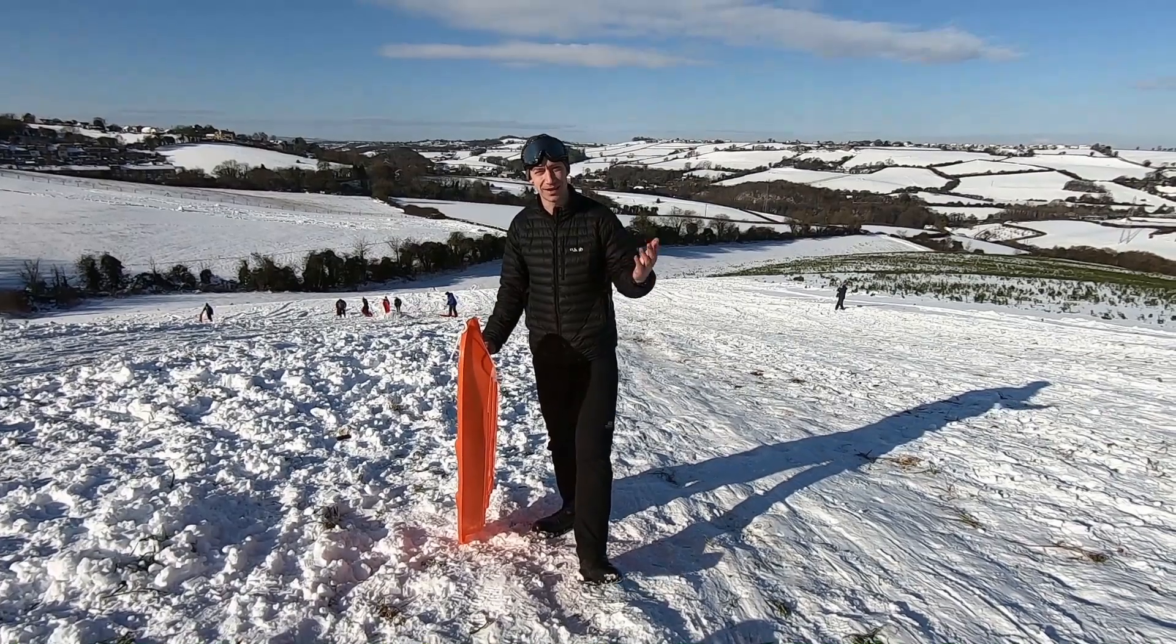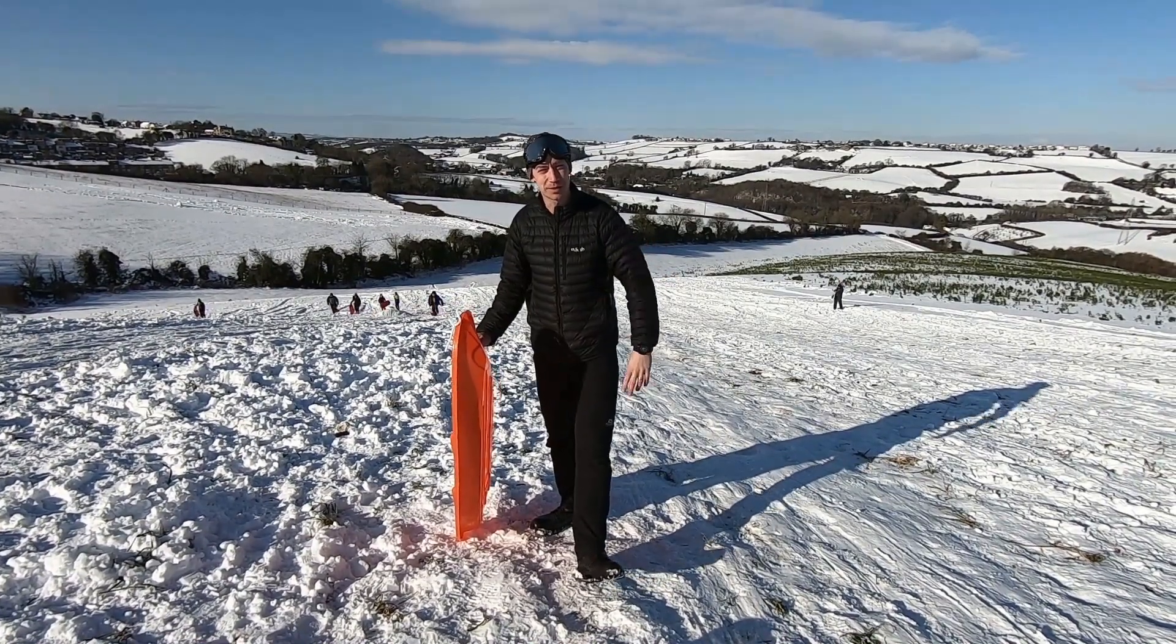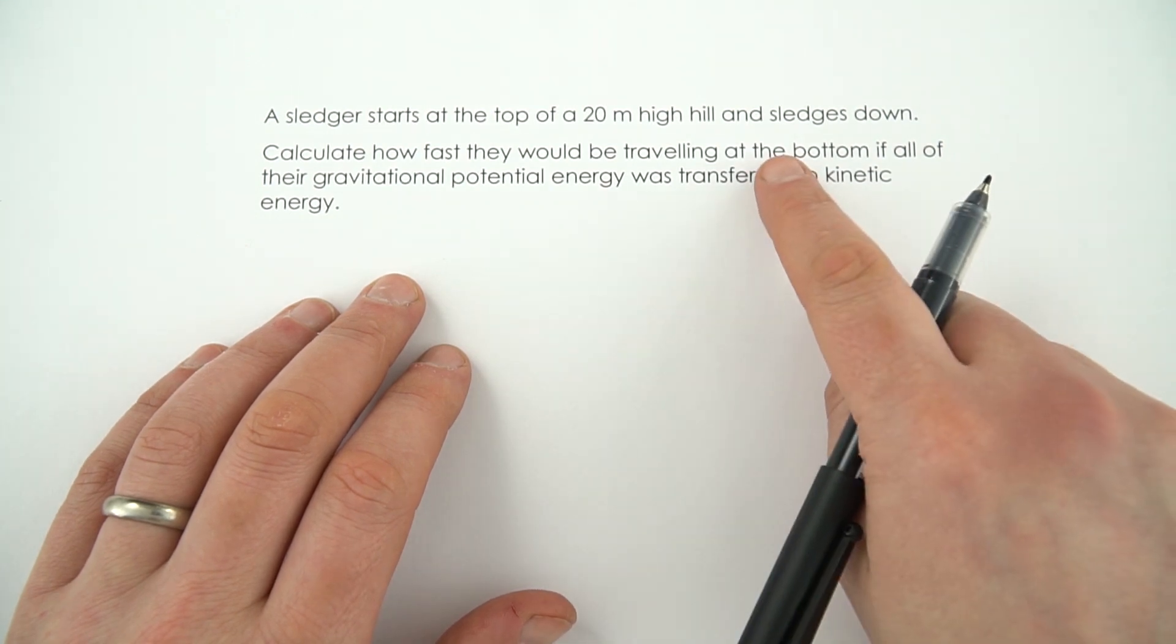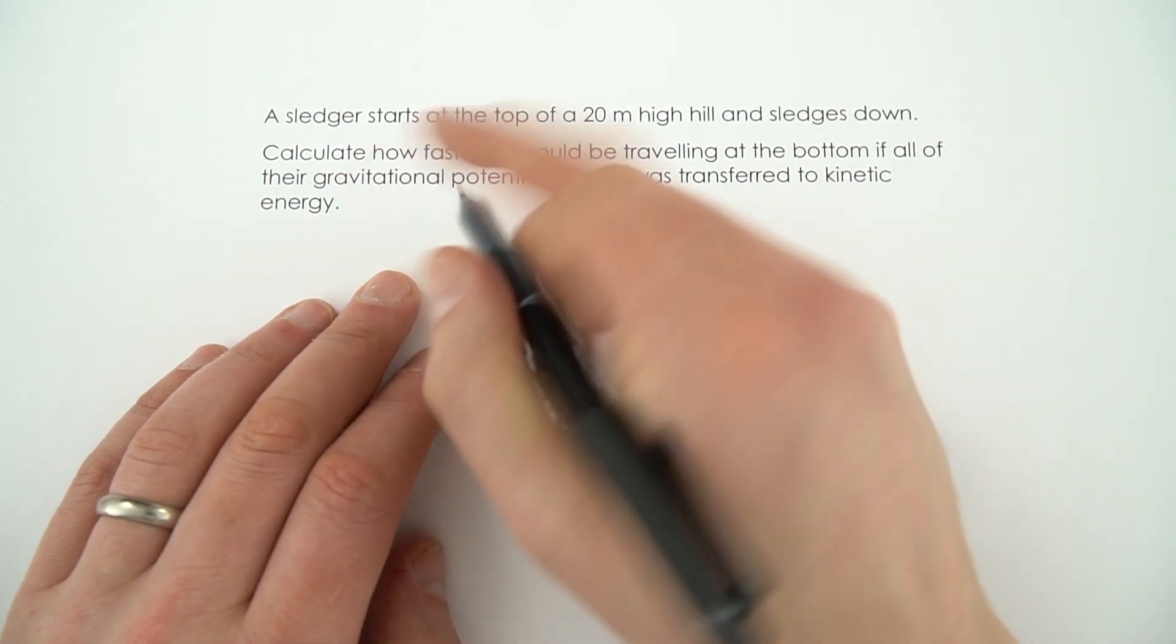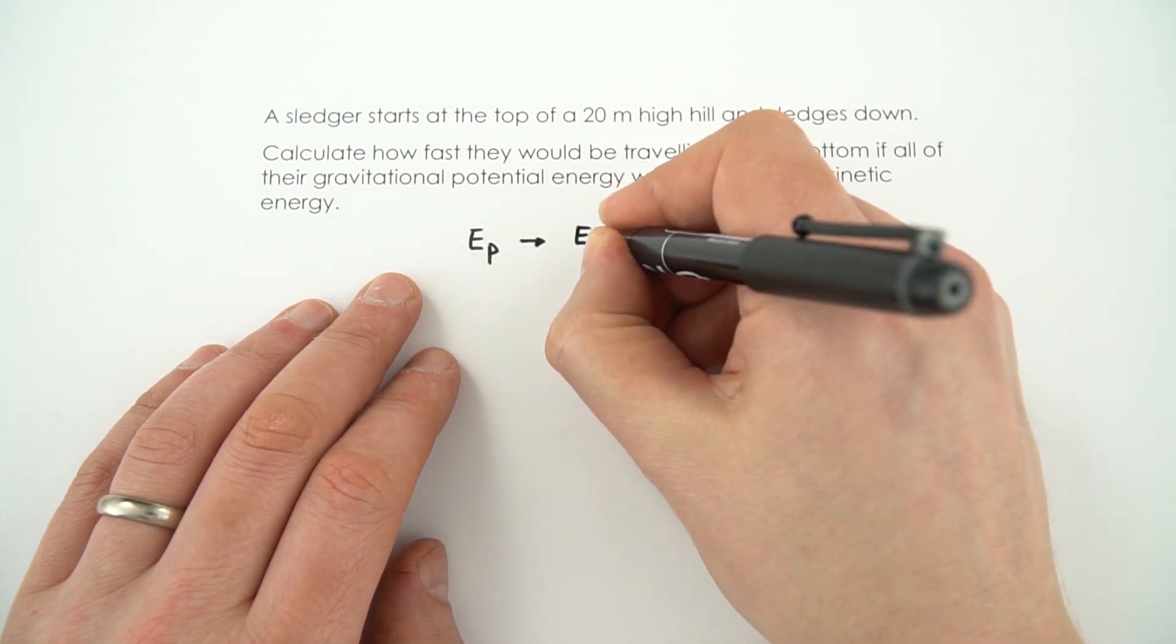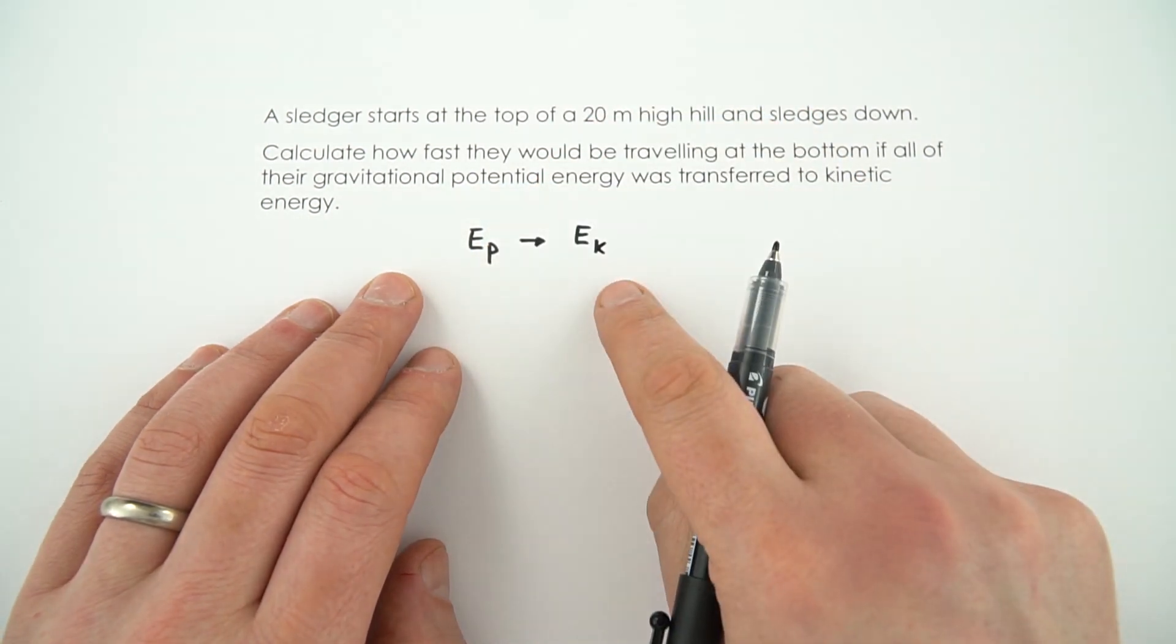So we're going to see how quickly they theoretically could go by the time they get to the bottom of that hill. For this we're going to assume that there's no energy losses to the surroundings, so all of the original gravitational potential energy is transferred to the kinetic energy of the sledge at the very end.